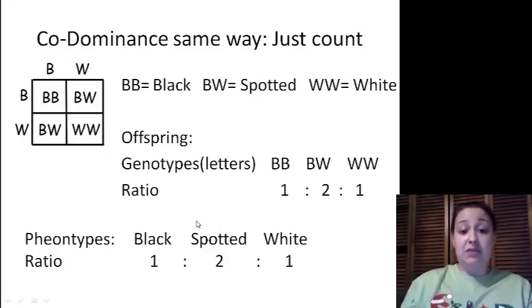Now again, down here in the phenotypes, we have three different physical features. So we have to represent all three, not just two like in dominant recessive. So we show the black. How many blacks do we have? We have one. How many spotted, which is going to be both showing, and that's why some of these codominants. We have two of those. And then how many whites? We have one.